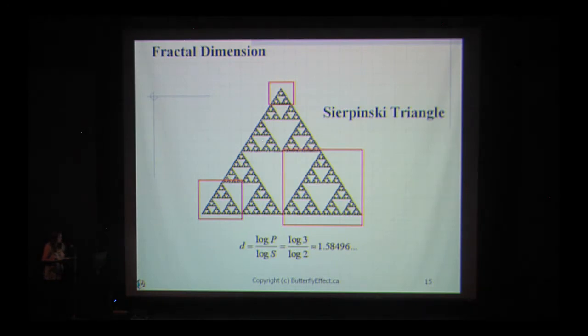Another property of fractals is something called a fractal dimension, where the dimension of the object is not a whole number like one, two, or three dimensions, but somewhere in between. In other words, the dimension of a fractal is a fractional number. That's why they're called fractals, because the dimension that they exist in is a fraction.